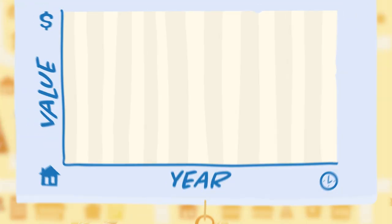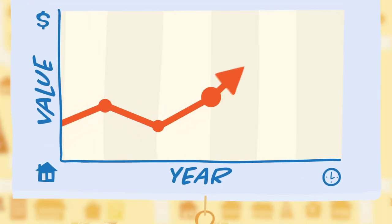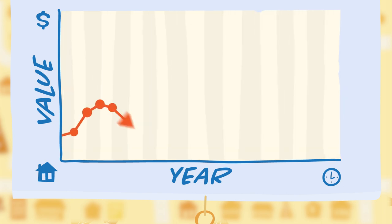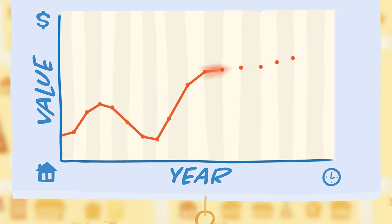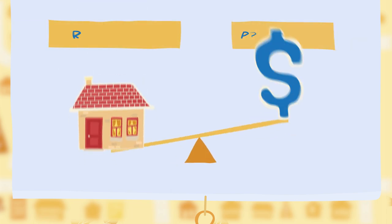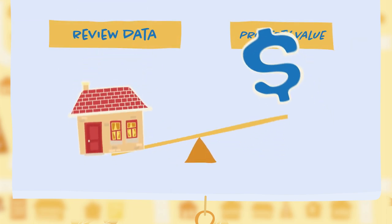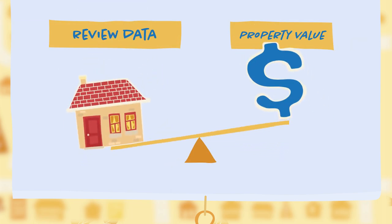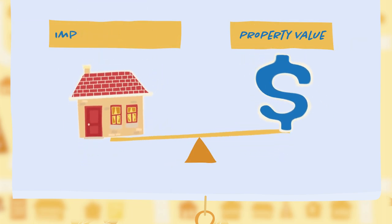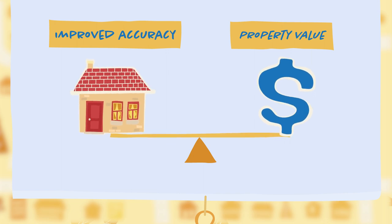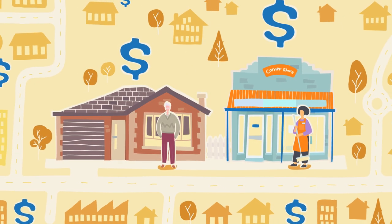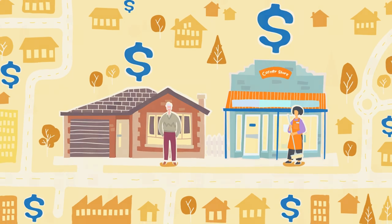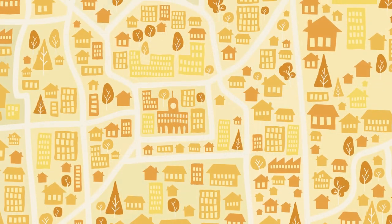Annual changes to your property value can be variable, depending on what is happening at the time. To check these changes are balanced and as accurate as possible, the Valuer General will occasionally complete a project to review their data. This ensures individual contributions to the community are fair and equitable.